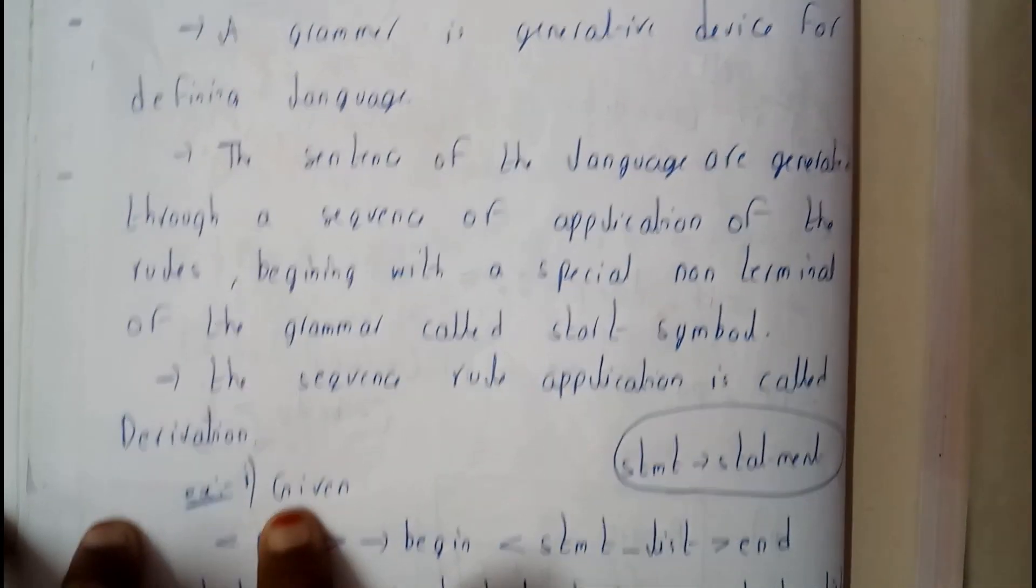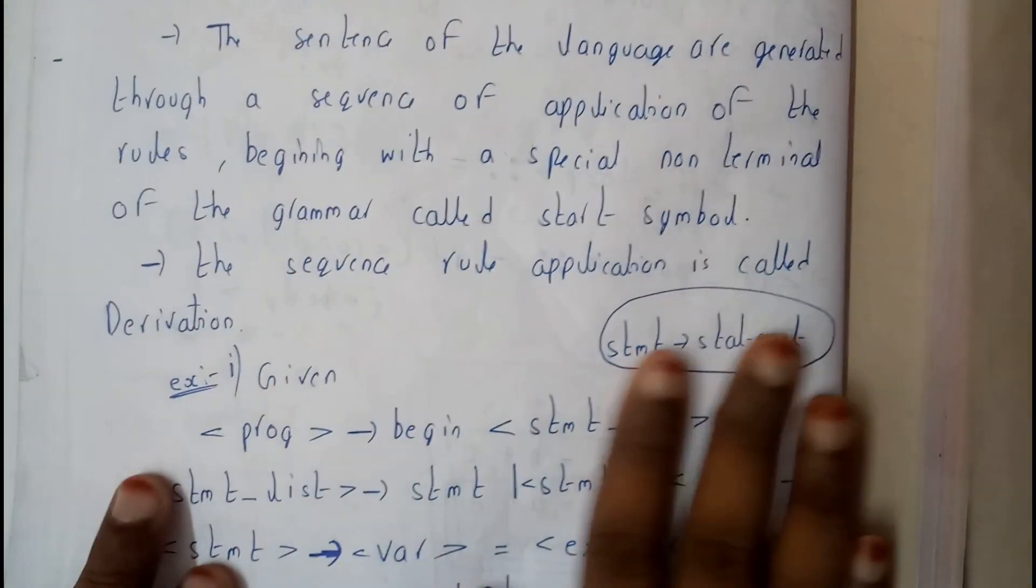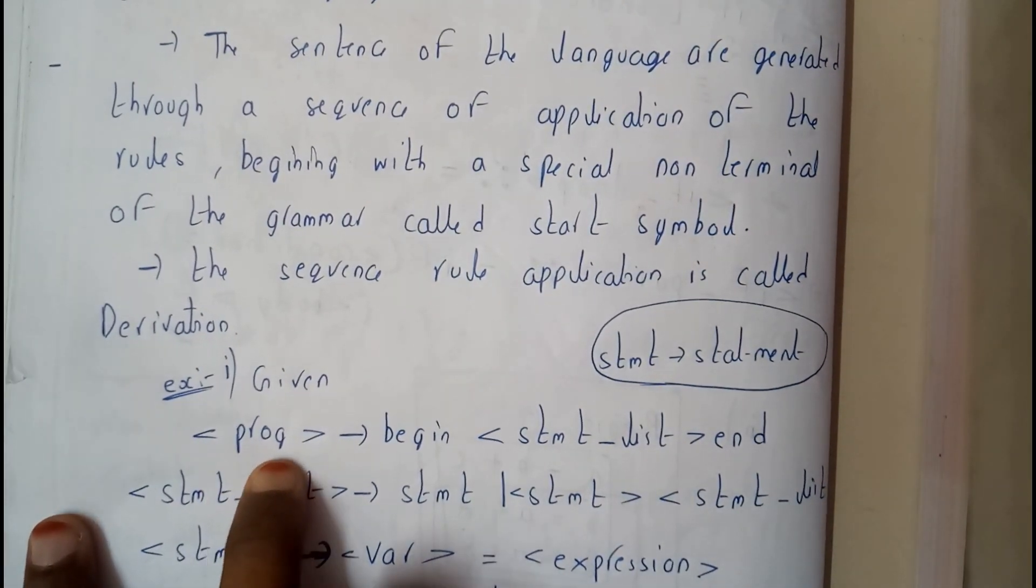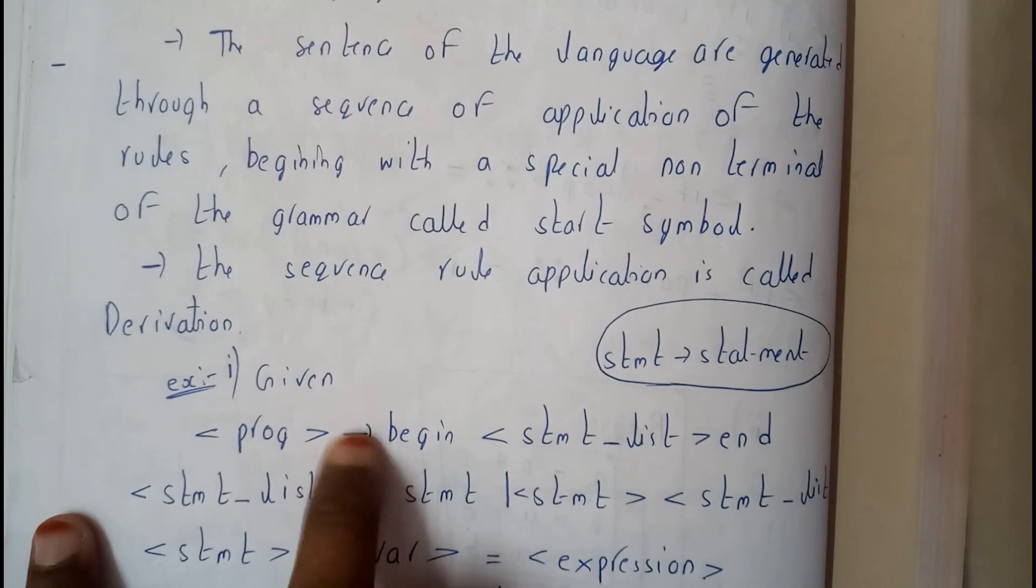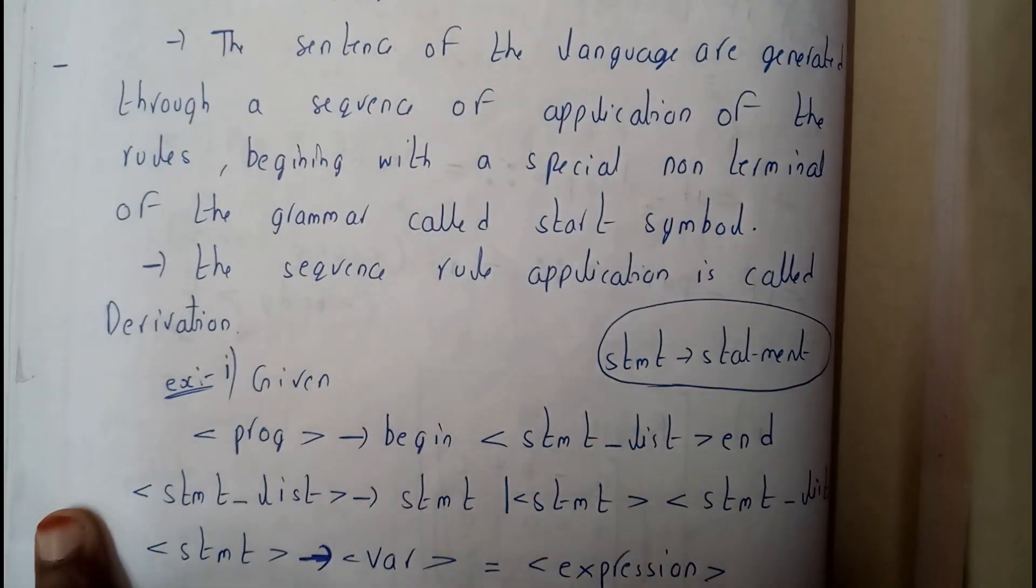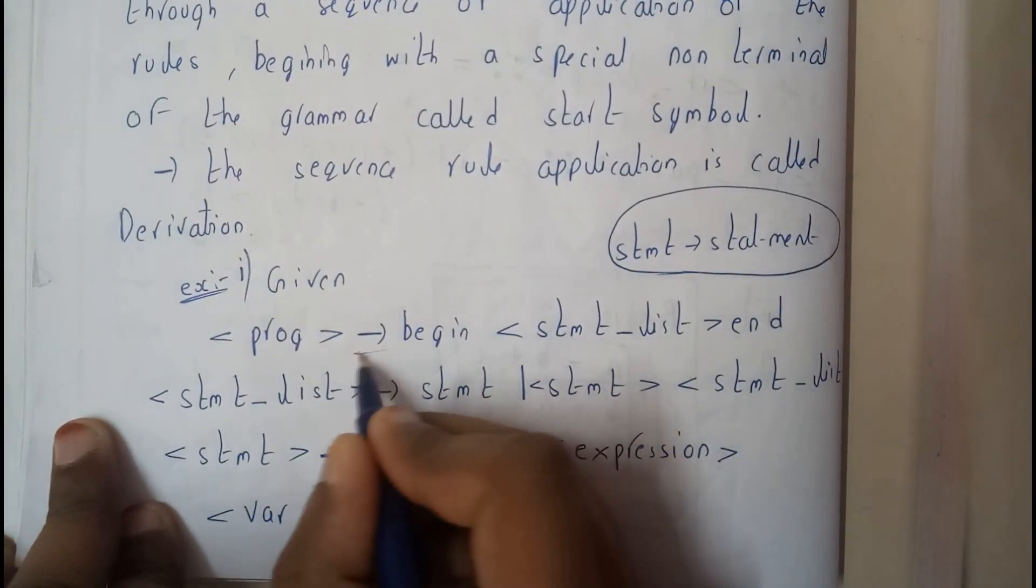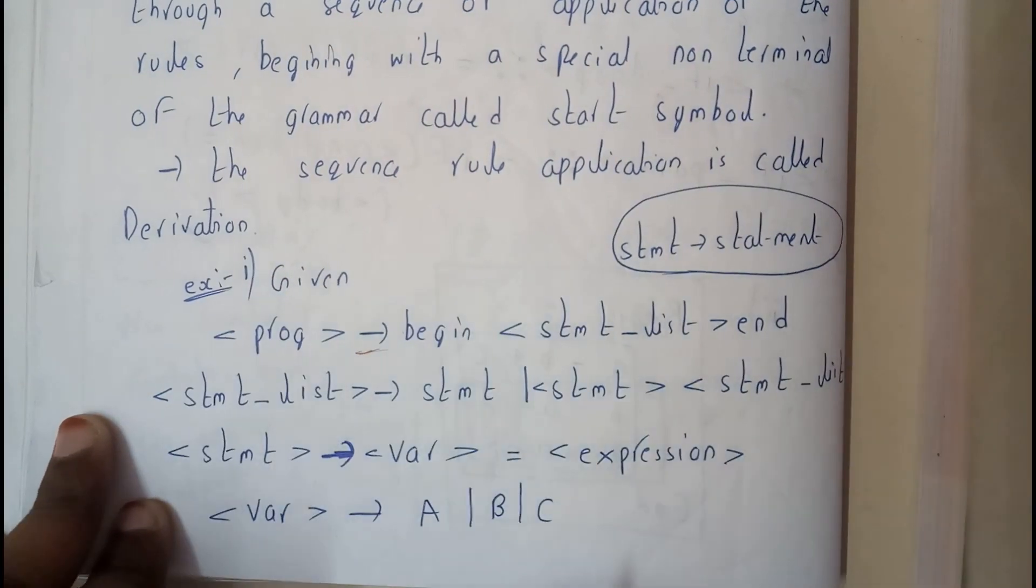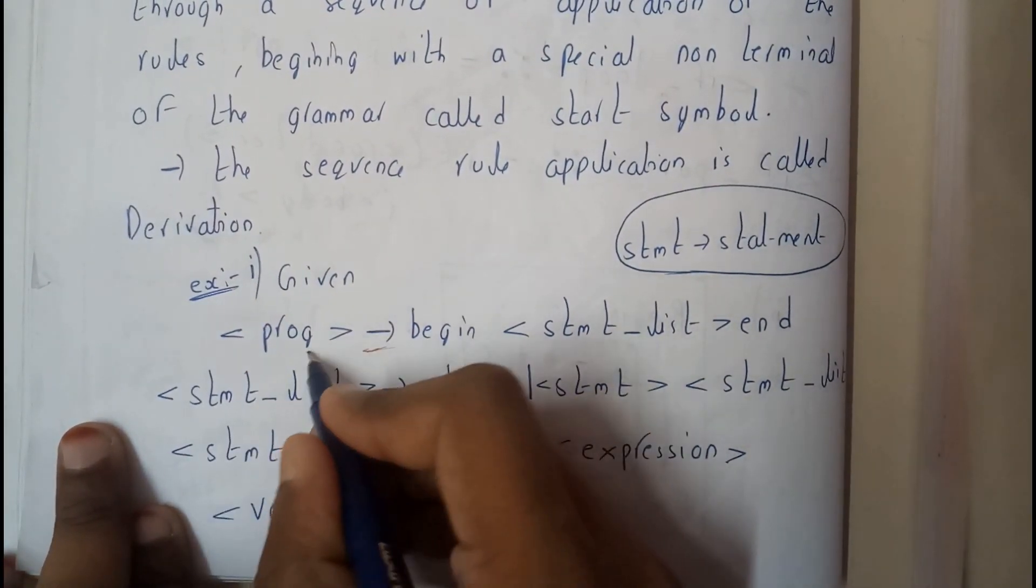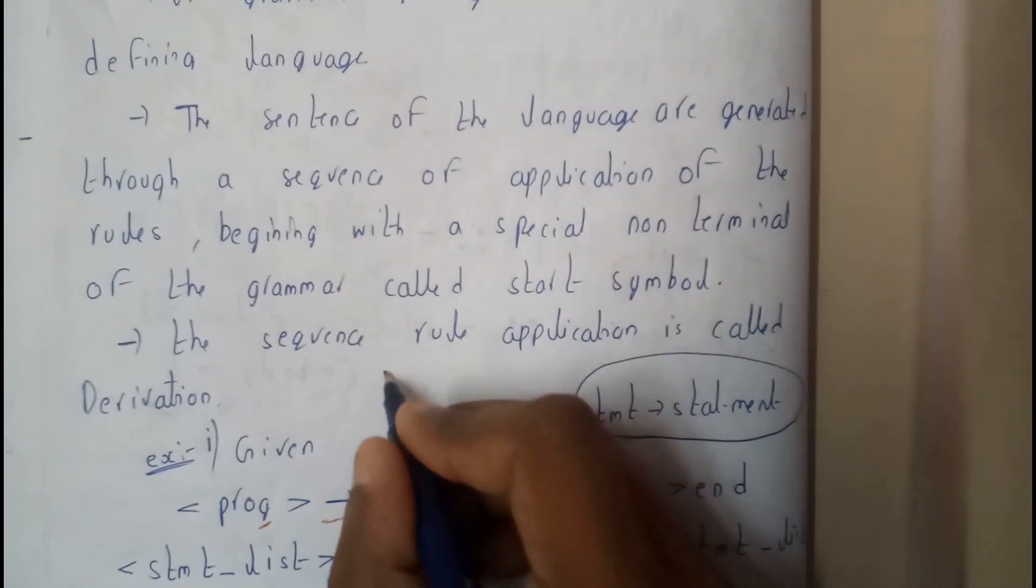Let's take an example. Assume there is a language like prolog or something else. Here, stm is nothing but a statement. Let's assume we are beginning the program - I kept an arrow so it will be clear. This whole part is substituted in this prolog. I started it with begin and statement, so the program is like begin, statements.